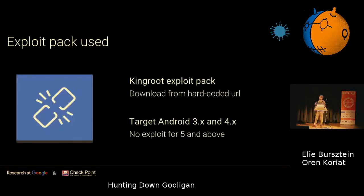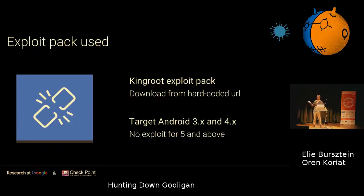Once we've decoded the payload, we can download the rootkit. What is Gooligan using for a rootkit — did they develop their own exploits? No, they used a third-party service: Kingroot. This is a very famous rooting solution in Android, well known to anyone familiar with the Android ecosystem. The exploits within this rootkit were relevant for Android versions between 3 and 4.